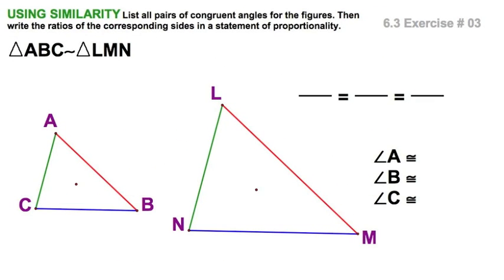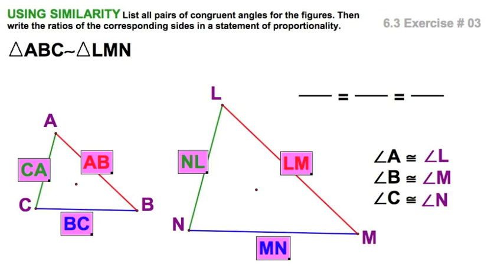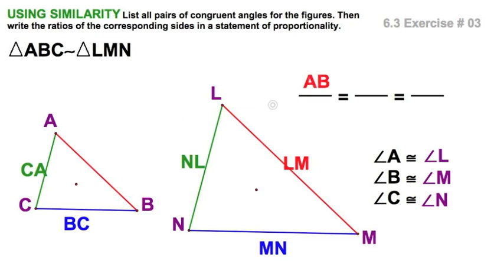These two triangles are similar: ABC and LMN. That means all these angles - angle A is congruent to angle L, angle B is congruent to angle M, and angle C is congruent to angle N. As far as sides go, pretty obvious here: the ratio - the red sides - we'll say AB is to LM as BC is to MN as CA is to NL. Those are your ratios.